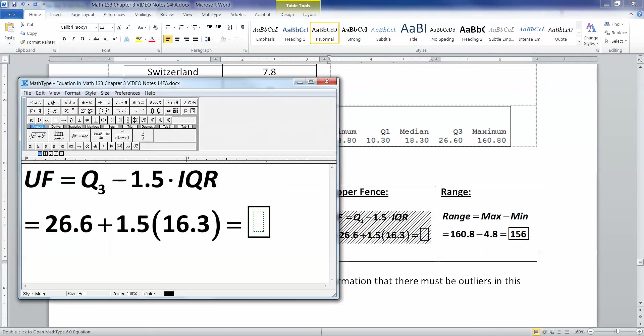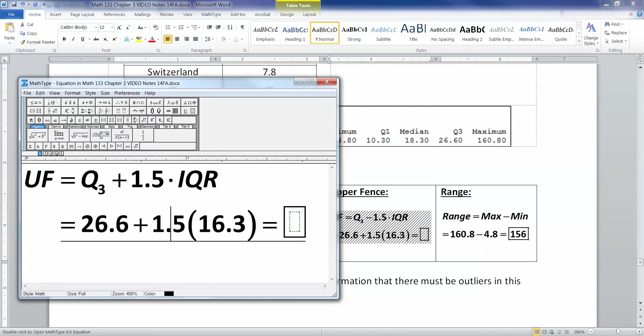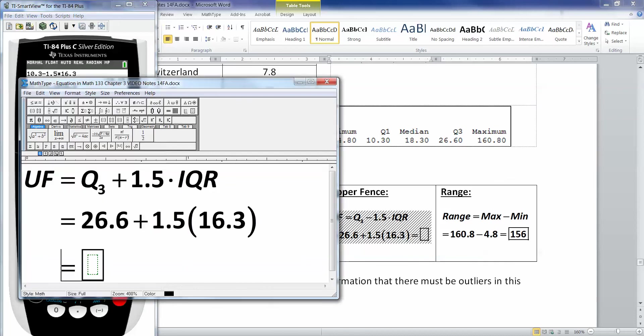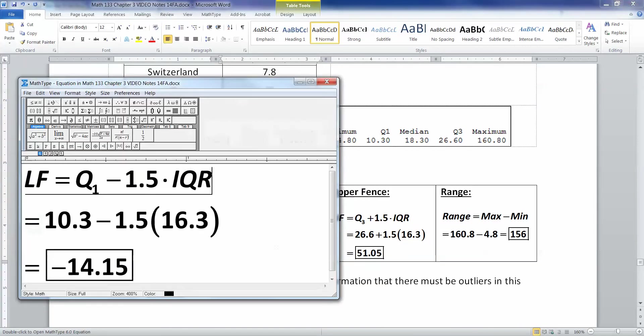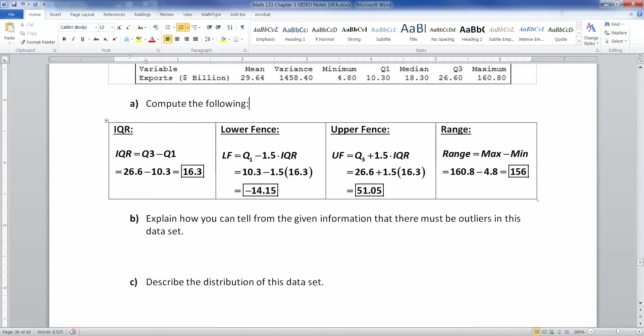All right, now for the upper fence, it's the same idea, except it's plus 1.5 IQR. So that would be Q3, or 26.6 plus 1.5 times 16.3. So that's 26.6 plus 1.5 times 16.3. Or if you like, you can use parentheses, either one. And it's 51.05. All right, there we're all set.